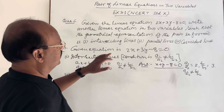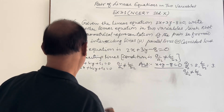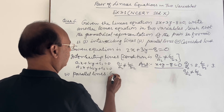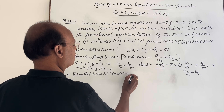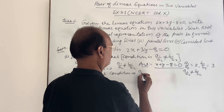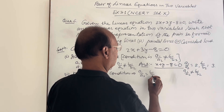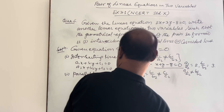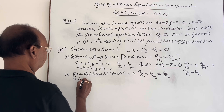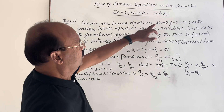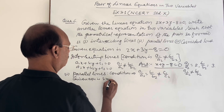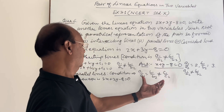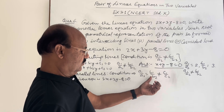The second case is parallel lines. What is the condition here? The condition for parallel lines is a1/a2 = b1/b2 ≠ c1/c2. The given equation is 2x + 3y - 8 = 0. Considering this condition, a1/a2 should be equal to b1/b2.